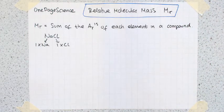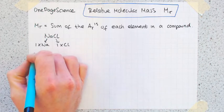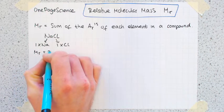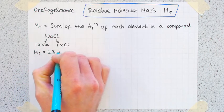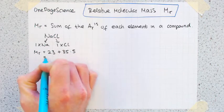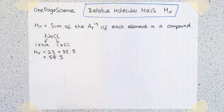Remember always to have your periodic table to hand in the exam. So the calculation that we want to do is that the MR for sodium chloride is 23 plus 35.5, which equals 58.5. So that's sodium chloride done.